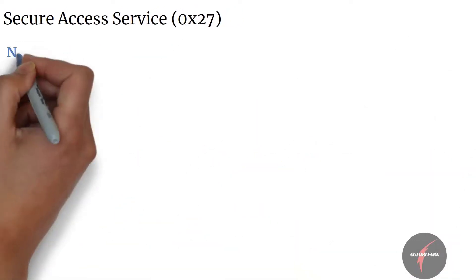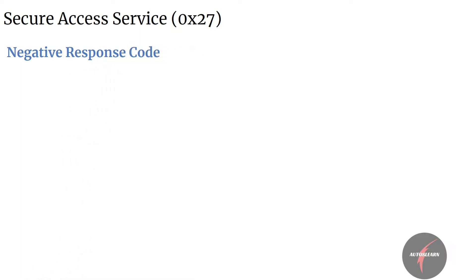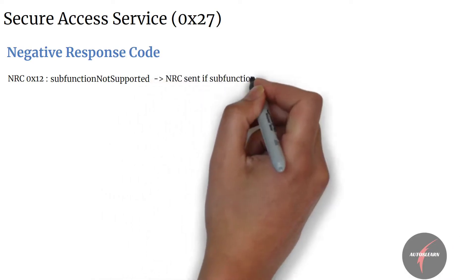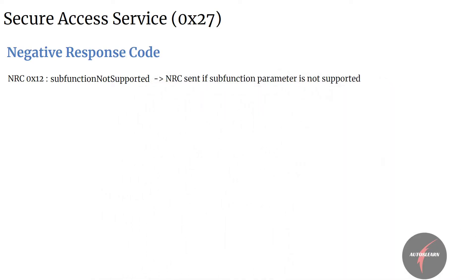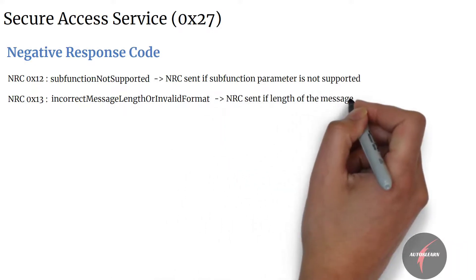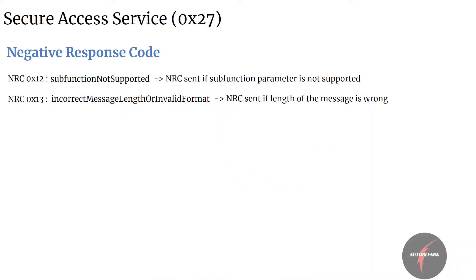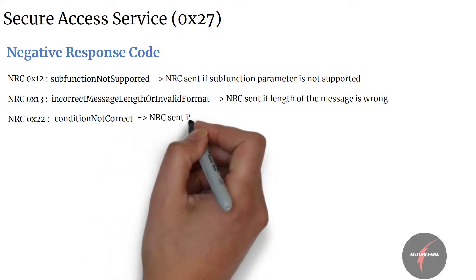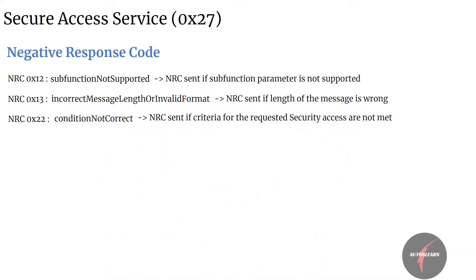Let's now have a look into the negative response codes applicable to security access. Firstly, NRC 12 — sub-function not supported — is sent if the sub-function parameter is not supported. NRC 13 — incorrect message length or invalid format — is sent if the length of the message is wrong. NRC 22 — condition not correct — is sent if the criteria for the requested security access are not met.